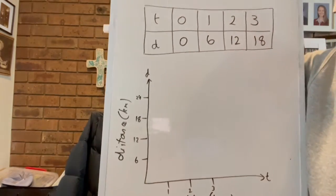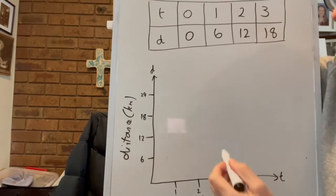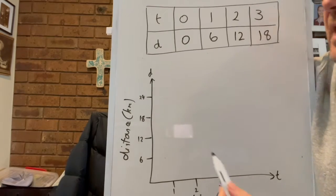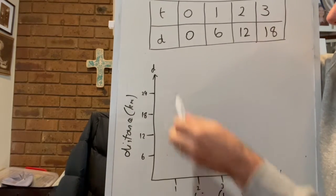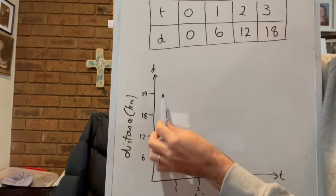We can then draw up our graph. Now in this case we only need the one quadrant because they're all positive values here. You can't run negative kilometers so we only need our, we're going to make our y-axis or d for distance.